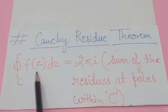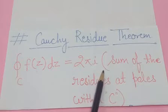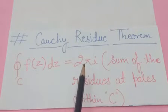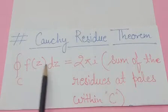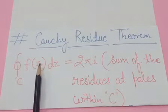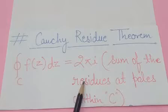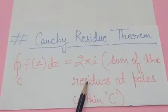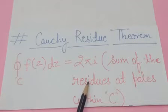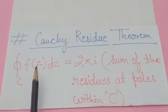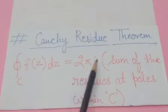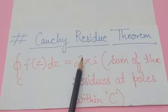The value of this integration is 2πi into the sum of residues at poles within C. First, find the poles of the given function. Then, according to the type of pole — simple pole or pole of order n — find the residue value. Once you find all residues, add them all together.